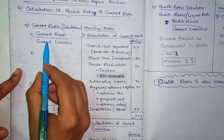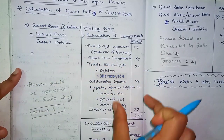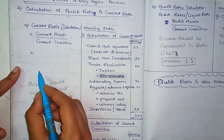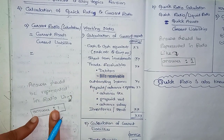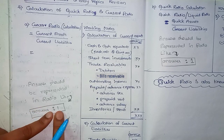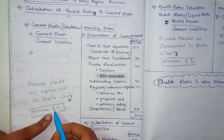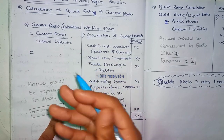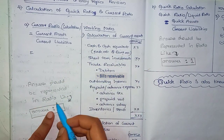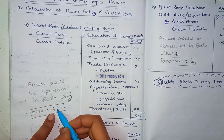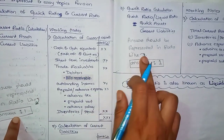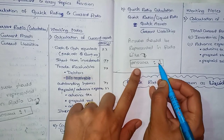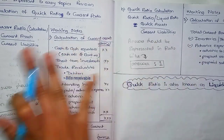Write the main formula: current assets divided by current liabilities. Express the resulting answer as a ratio — write it as X is to 1. For example, if you get 0.1 or 0.2 or any number, write it as that number is equal to 1. The answer must always be expressed in ratio form.